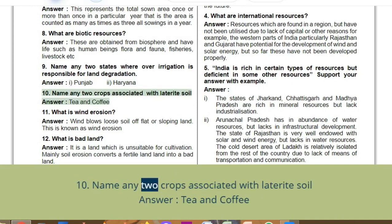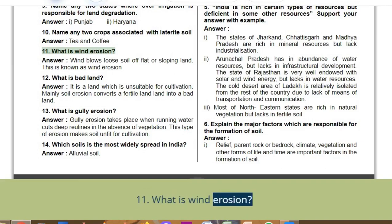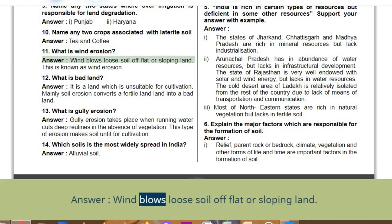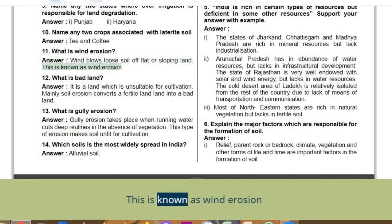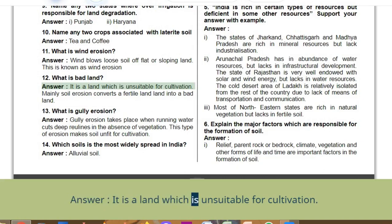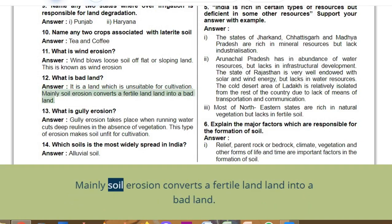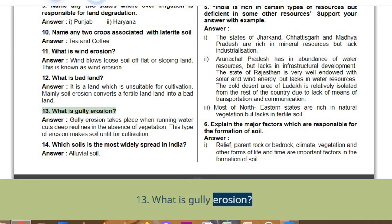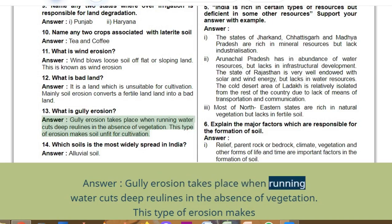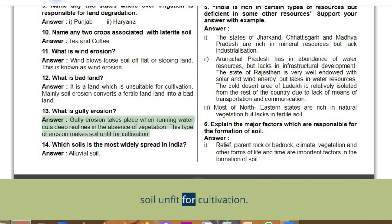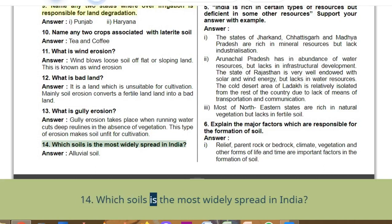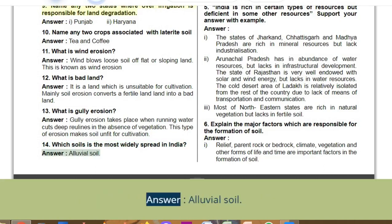Q10: Name any two crops associated with laterite soil. Answer: Tea and coffee. Q11: What is wind erosion? Answer: Wind blows loose soil off flat or sloping land — this is known as wind erosion. Q12: What is bad land? Answer: It is land unsuitable for cultivation; mainly soil erosion converts fertile land into bad land. Q13: What is gully erosion? Answer: Gully erosion takes place when running water cuts deep gullies in the absence of vegetation, making soil unfit for cultivation. Q14: Which soil is the most widely spread in India? Answer: Alluvial soil.